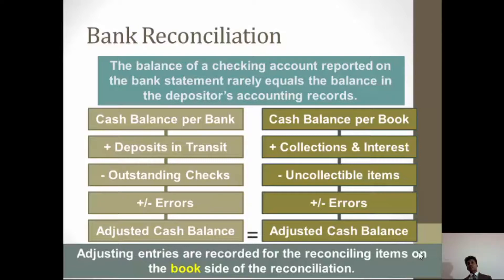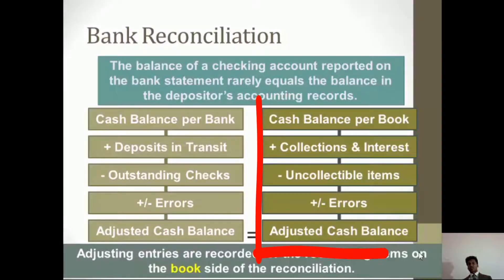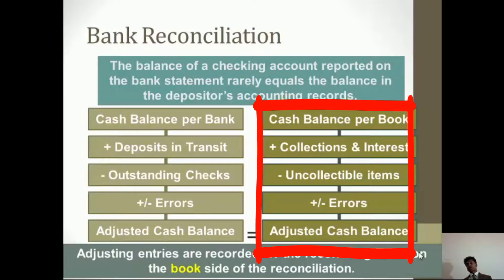The second part of reconciliation is the cash balance recorded in the accounting information system. There could be some collections that the bank has received but not recorded in the accounting system. There also could be payments the bank has made, like bank charges, that are not recorded in the accounting system.